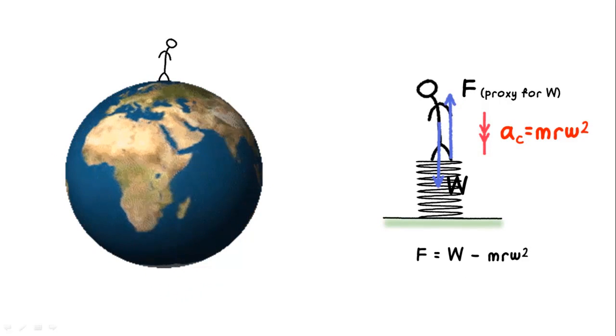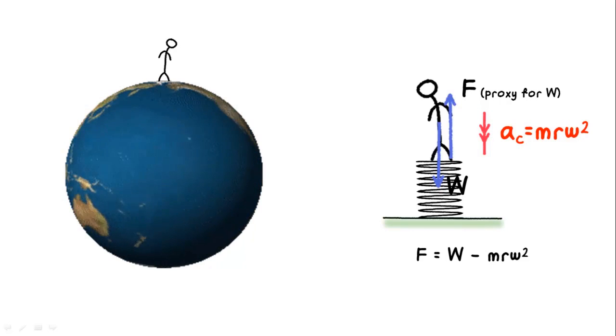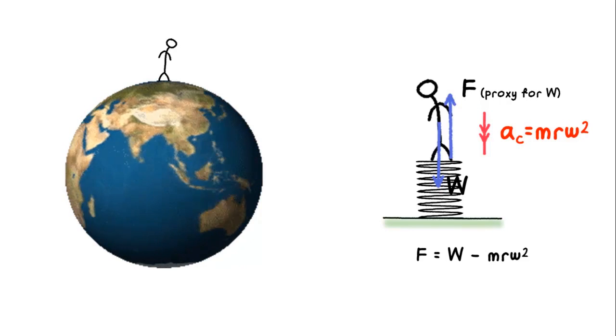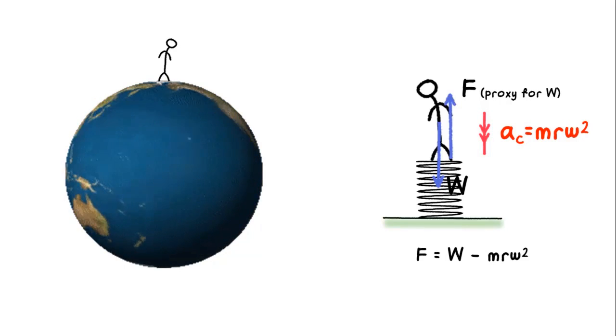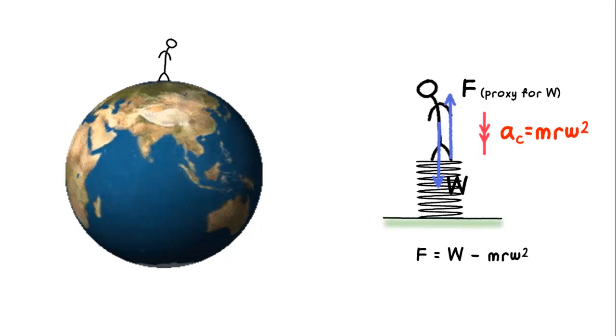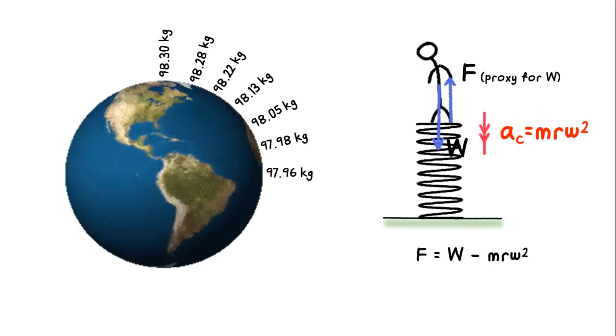Imagine someone walks from the North Pole to the equator and measures his weight every day. After taking into account the variation in Earth's gravitational field strength due to non-uniformity of the Earth, he will notice his weight reading falling as he gets nearer to the equator.